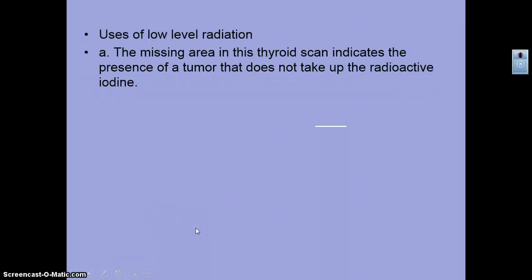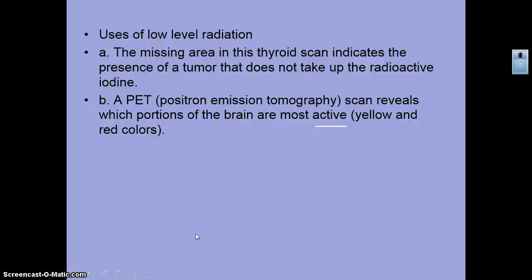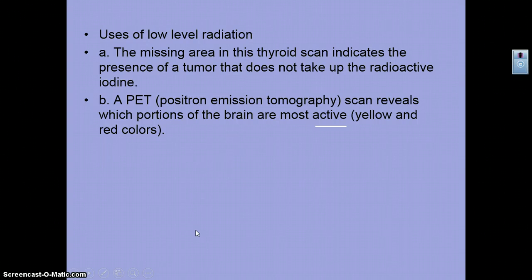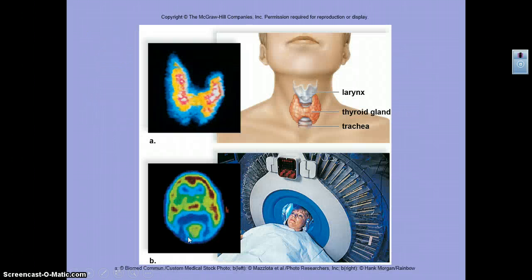So what do we use radiation for? We use low levels of radiation for things such as a thyroid scan — this scan indicates a tumor because it doesn't take up the radioactive iodine that was absorbed by the surrounding tissue. We also use PET scans — positron emission tomography — which show which portions of the brain are active; the active parts appear in yellow and red colors.